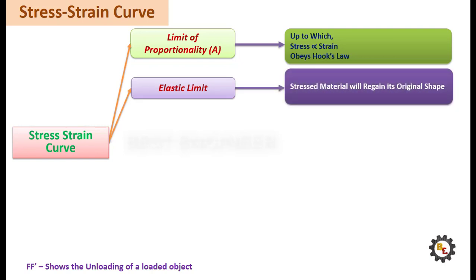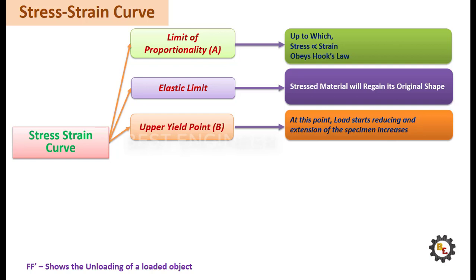Point B, elastic upper yield point. Up to which material will regain its original shape after load removal. After this point, load starts reducing and extension of the specimen increases.